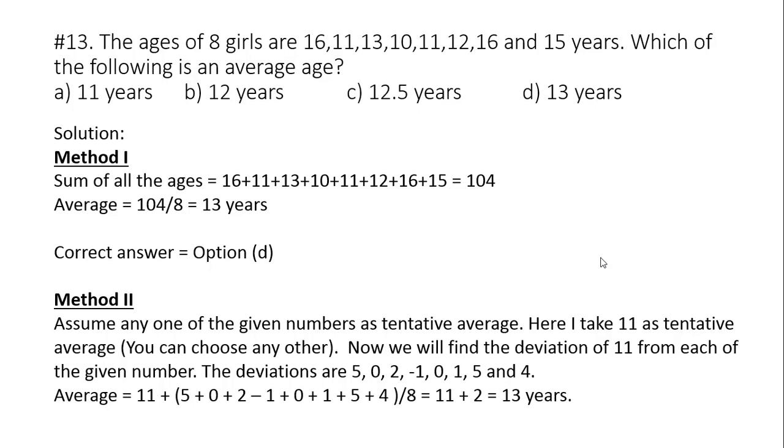Find sum of all the ages. So 16 plus 11 plus 13 plus 10 plus 11 plus 12 plus 16 plus 15 and the answer is 104. Now divide 104 by number of girls, that is 8. So the answer is 13 years. So the correct answer is option D.